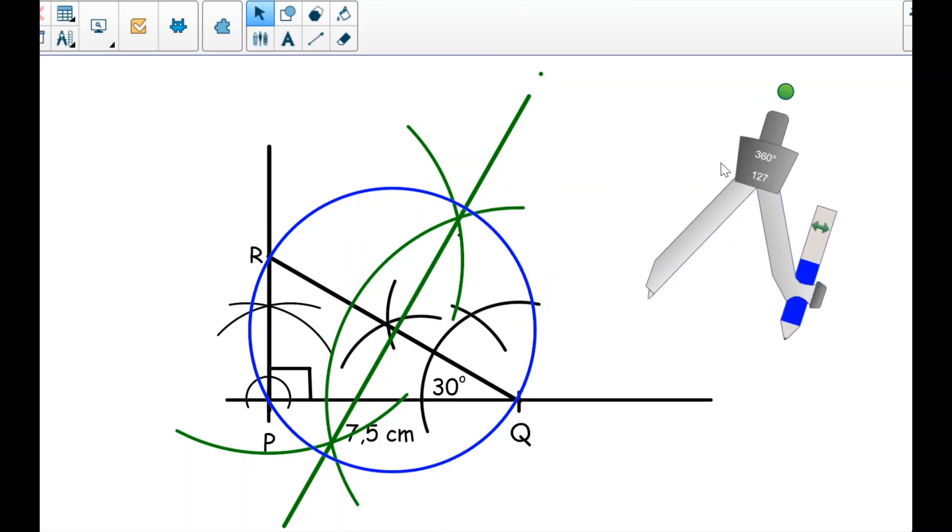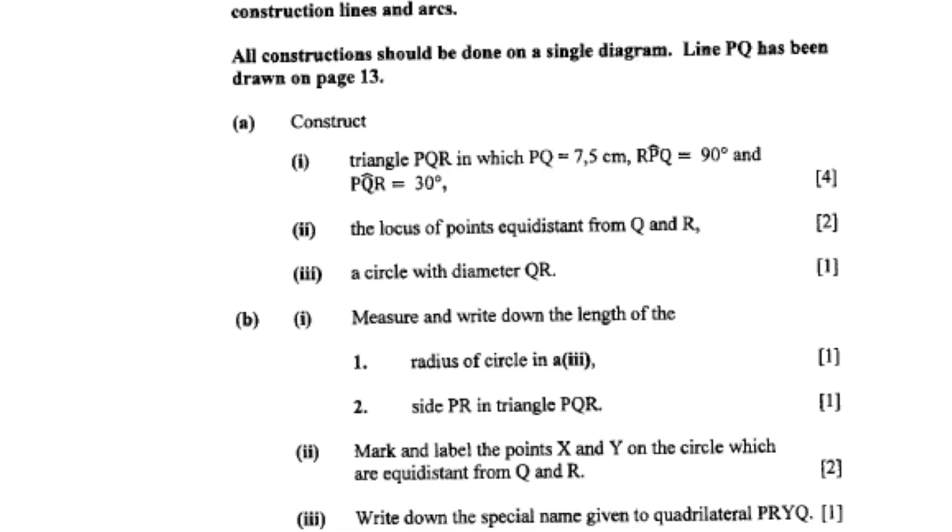You can see that Q and R are part of the circumference, so this means my circle is correct. Then the next question: measure and write down the length of one radius of the circle and side PR in the triangle PQR.